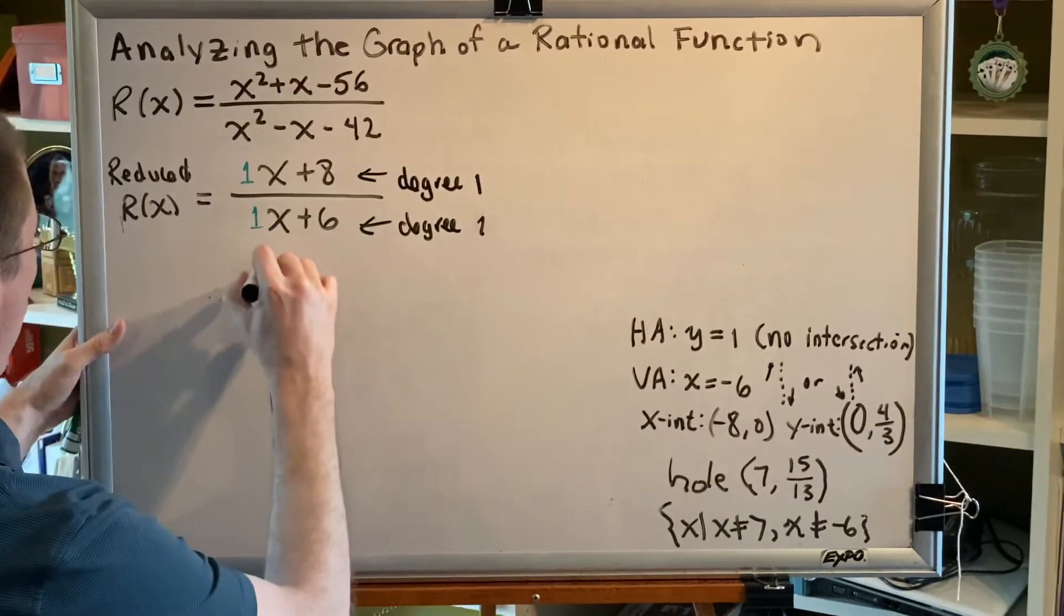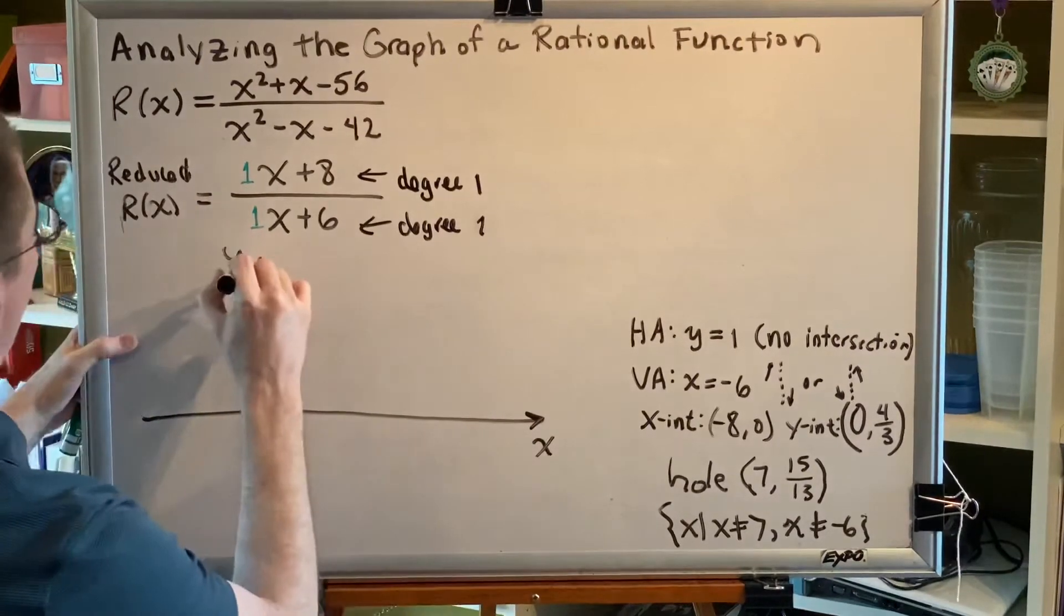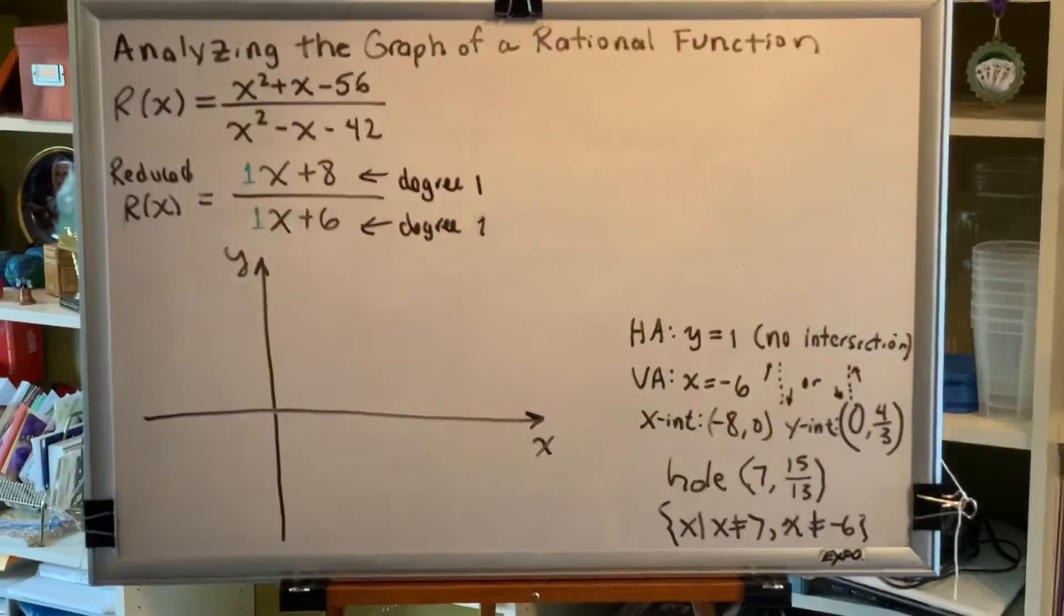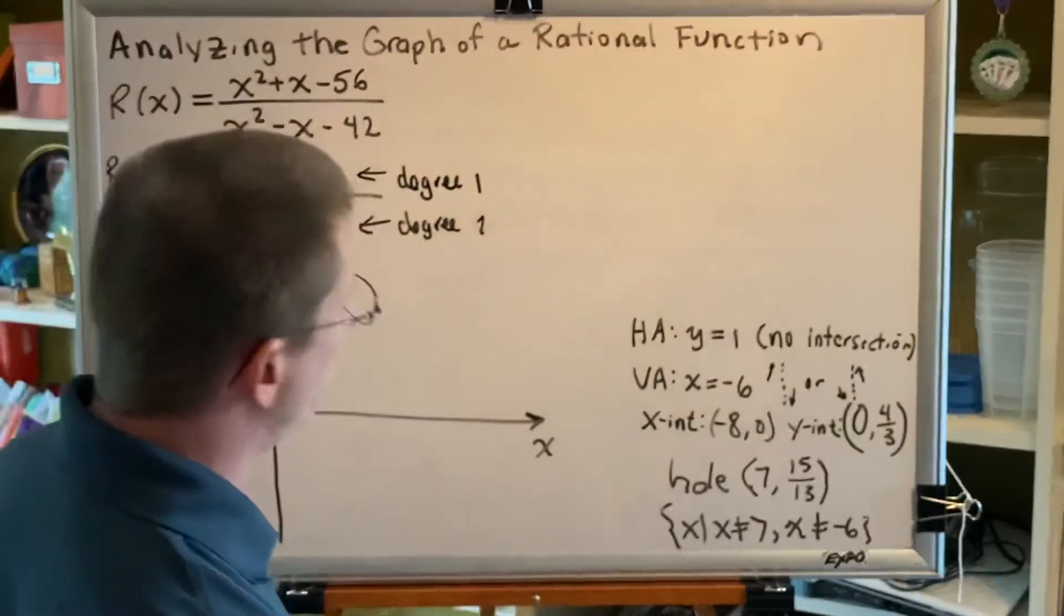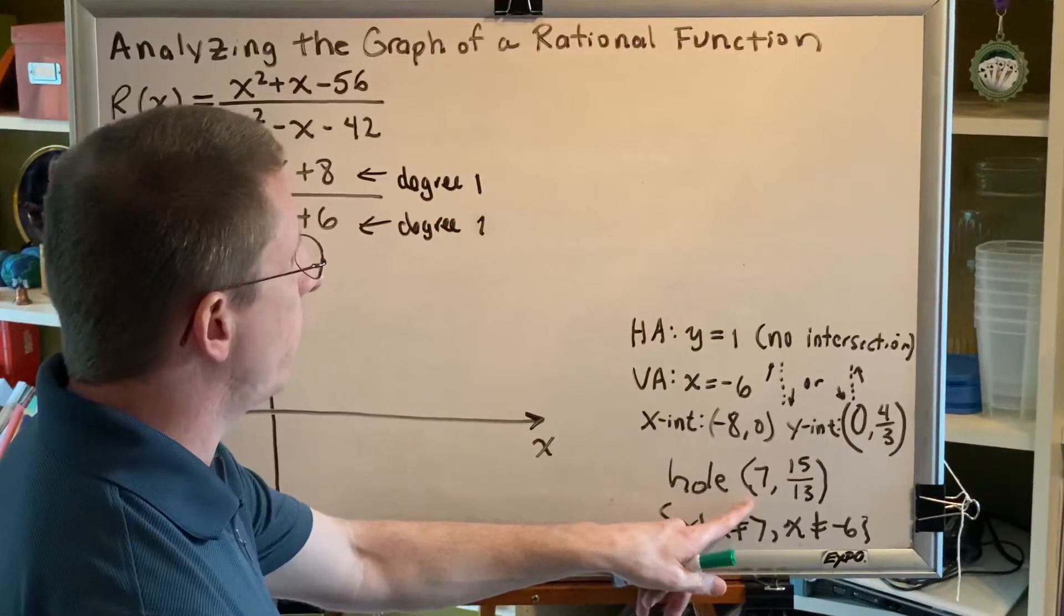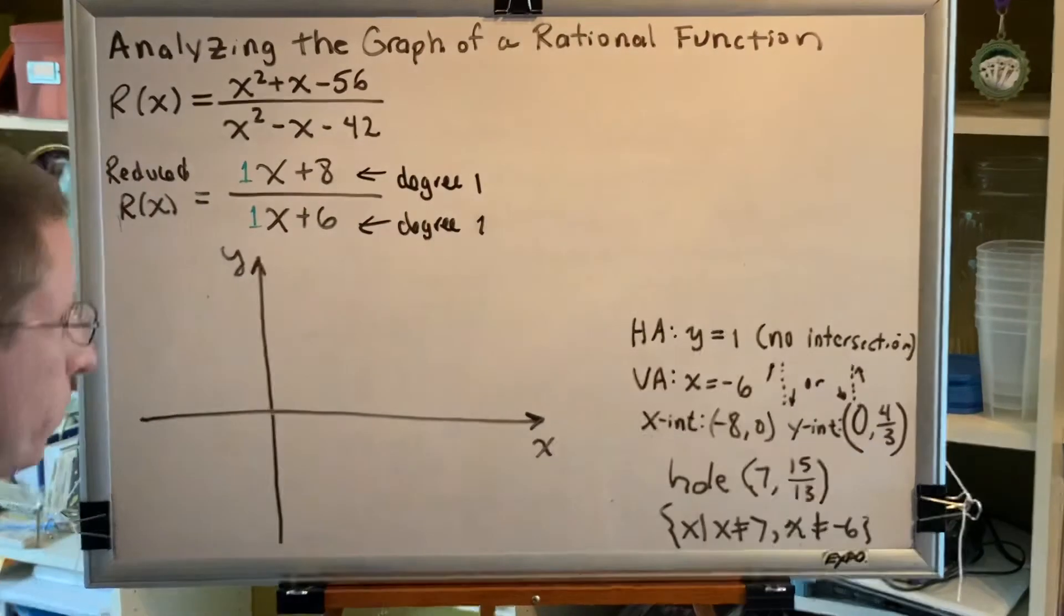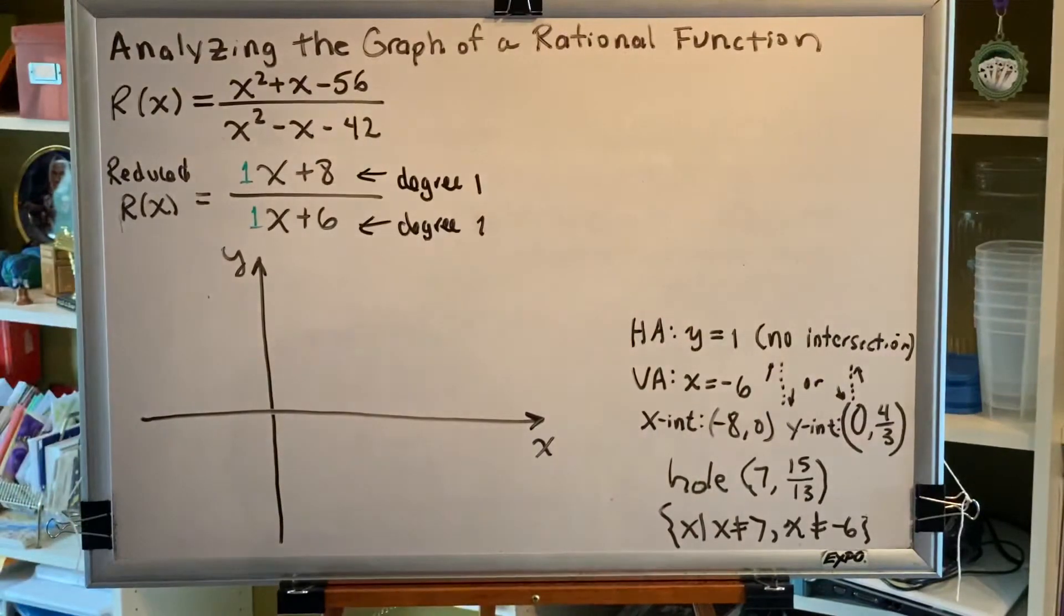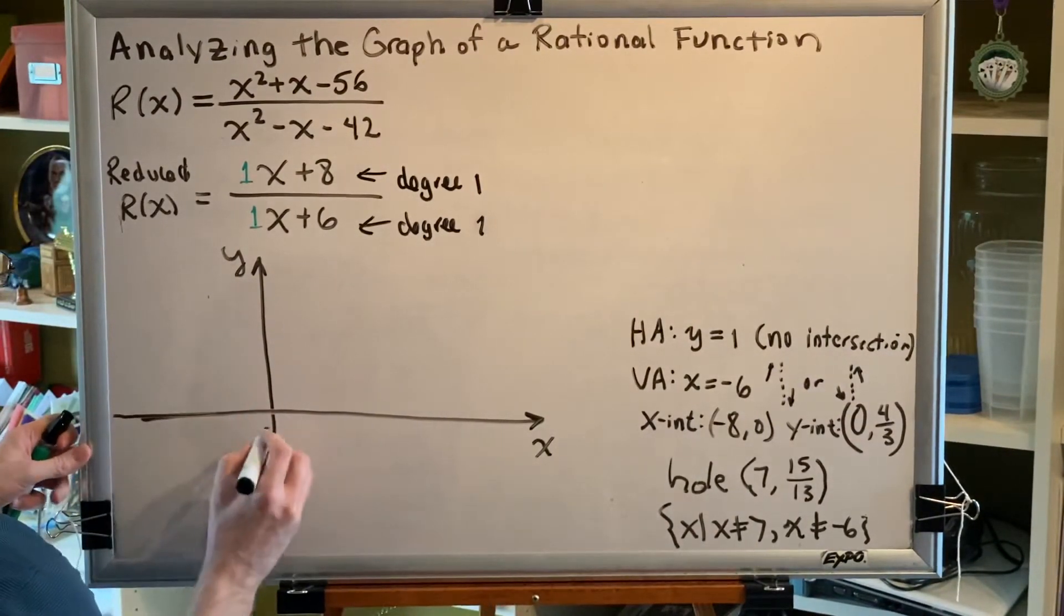Let's draw a y-axis and an x-axis and begin plotting the things we know. We need to set the scale of our graph so that it accommodates all of the points we found, 7 comma 15 thirteenths, negative 8 comma 0, and 0 comma 4 thirds.